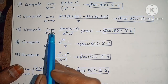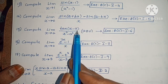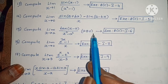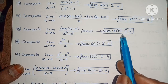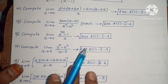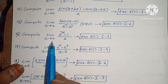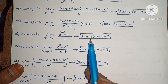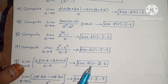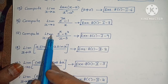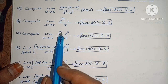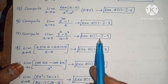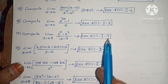Next: Compute limit extends to a of tan of x minus a by x squared minus a squared, where a not equals to 0. Exercise 8c, first roman law, sixth one. Next: Compute limit extends to 0 of e power 7x minus 1 by x. Exercise 8c, first roman law, seventh one. Next: Compute limit extends to 3 of e power x minus e cubed by x minus 3. Exercise 8c, first roman law, ninth one.